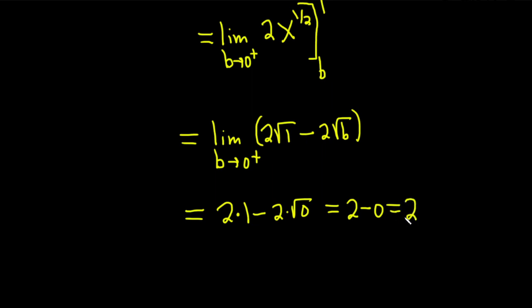So because we get a number, we say the integral converges. So our integral converges. Because we get a number, we say our integral converges. So if we get a number, it converges. If we don't get a number, so if we get like infinity or negative infinity, then it diverges.